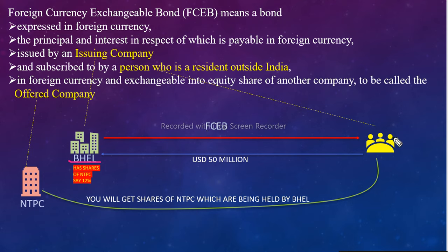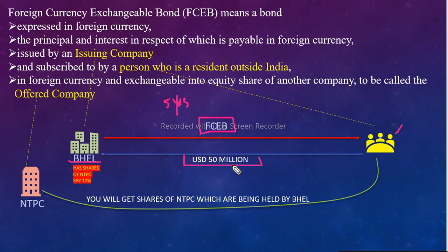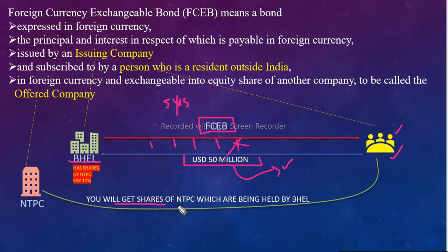Foreign Currency Exchangeable Bond ek tarike se ek receipt ho gayi. Humne foreign investors ko kaha: aap hamein 50 million USD dijiye, hum aapko ek receipt kaat ke dete hain. Us receipt mein likha hai ki hame 5 years ke liye 50 million USD chahiye, aur hum aapko har saal ke end mein interest pay karenge, aur fifth year end hone par aapko 50 million USD wapas kar denge.